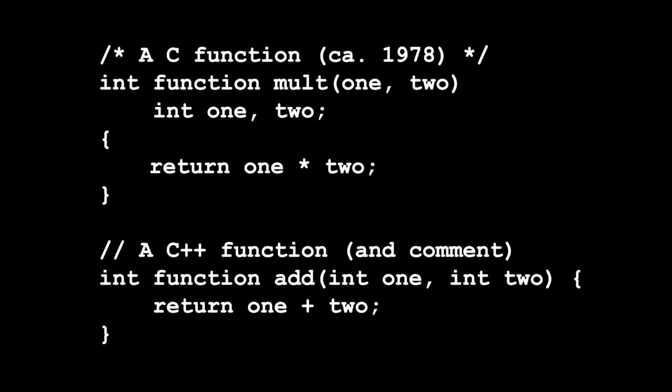Some of the ideas in C++ then retrofitted back into C, particularly the obvious one of how you declared the arguments for a function — that was just better — and a handful of other things. So for a while, you could say that C was a pretty close to perfect subset of C++. That's evolved in both directions, and it's less true now than it was, but for a long time you could take a C program and just run it through a C++ compiler and it would work.